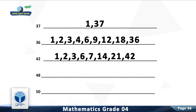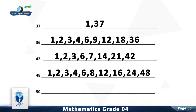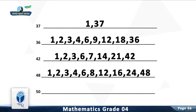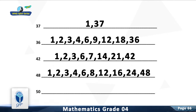Question 9: Write all the factors of 48. The factors of 48 are 1, 2, 3, 4, 6, 8, 12, 16, 24, and 48.